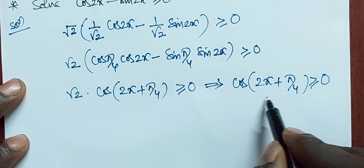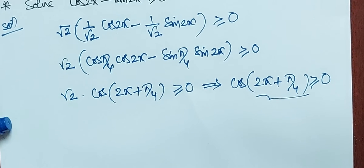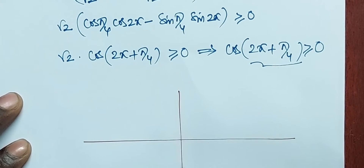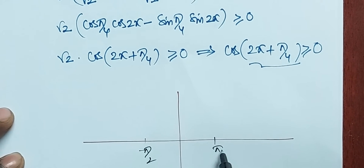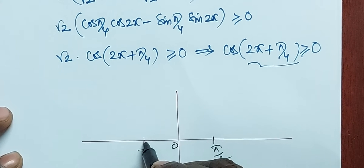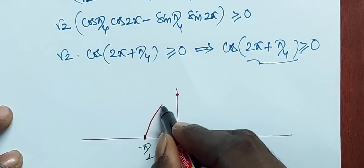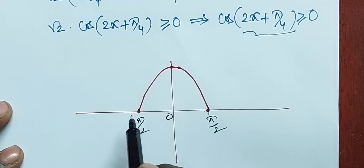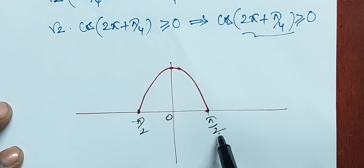Now clearly cos(θ) ≥ 0. Coming to the graph, suppose we take a graph like this. From minus π/2 to π/2, at minus π/2 it is 0, at π/2 it is 0, and at 0 it is 1 — so the behavior of cos is like this. Observe this graph: cos(θ) ≥ 0 at minus π/2 to π/2.